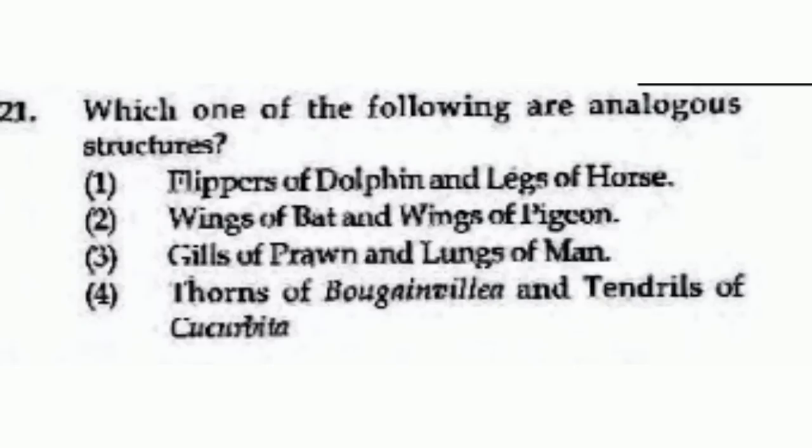Which one of the following are analogous structures? Out of the following options, the right answer is option number 3, Gills of prawn and lungs of man.